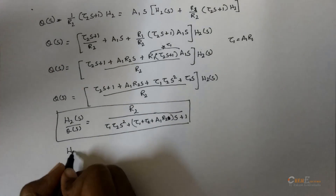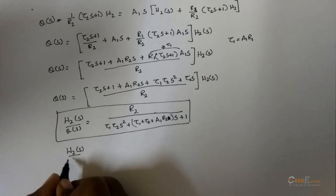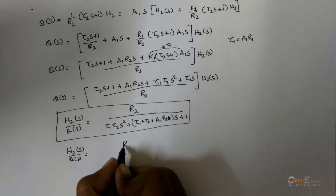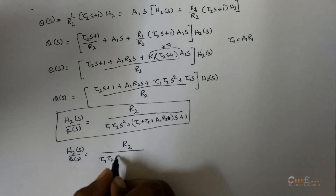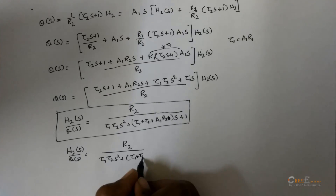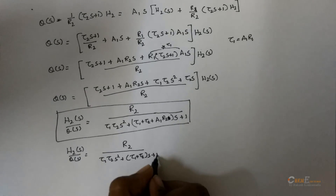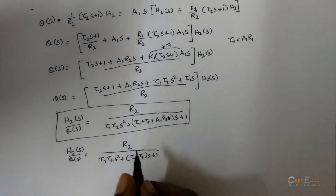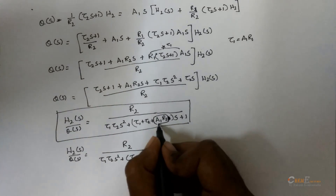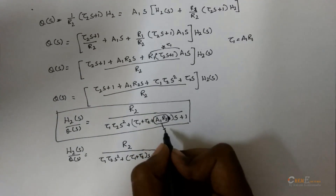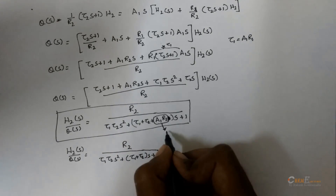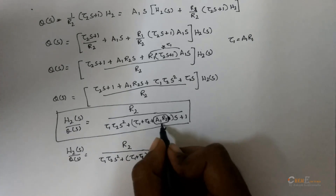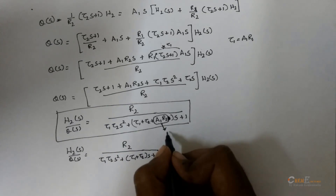For the non-interacting system, the previously derived transfer function is H2(s)/Q(s) = R2 / [τ1·τ2·s² + (τ1 + τ2)·s + 1]. Comparing the two, the extra term A1·R2 in the coefficient of s is present only in the interacting system. The presence of this term is due to the interaction and is the reason for the more sluggish response.